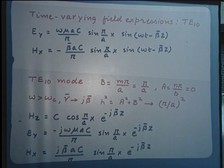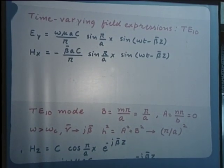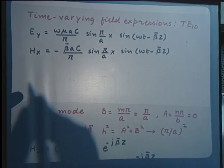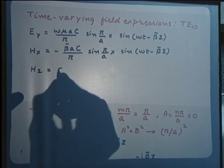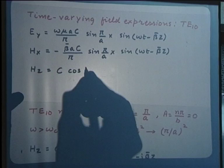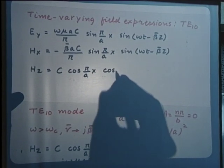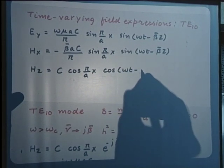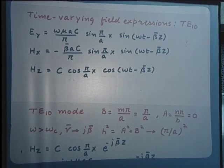The magnetic field components become: H_x equal to −(β̄·a·C/π)·sin(πx/a)·sin(ωt − β̄z). One can compare this with the phasor expression for H_x. And H_z turns out to be C·cos(πx/a)·cos(ωt − β̄z). These are the field expressions incorporating the time variation explicitly.